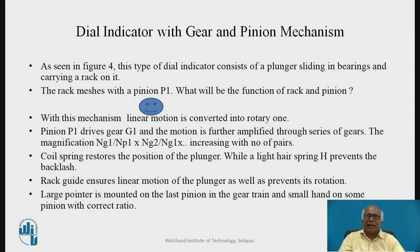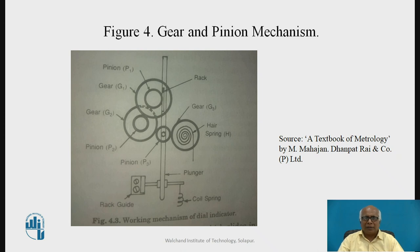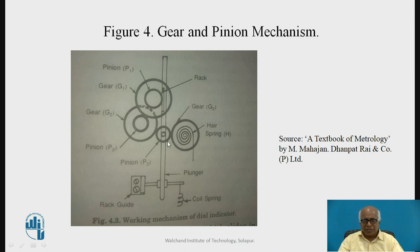Now, the dial indicator with gear and pinion mechanism is very commonly used. As seen in figure 4, this type of dial indicator consists of a plunger sliding in bearings and carrying a rack on it. The rack teeth are cut on or attached to the plunger, which moves in a linear direction.